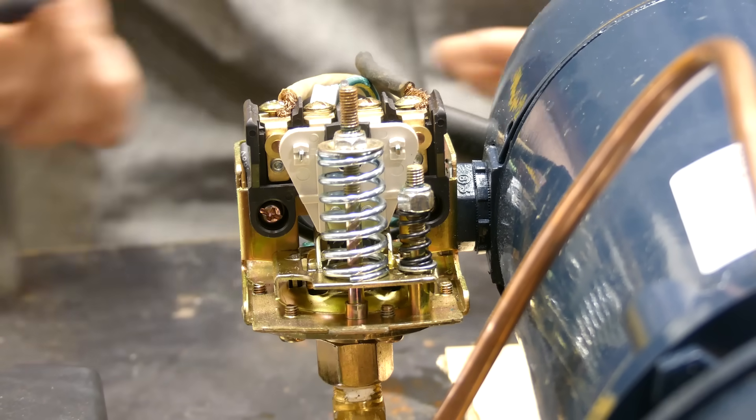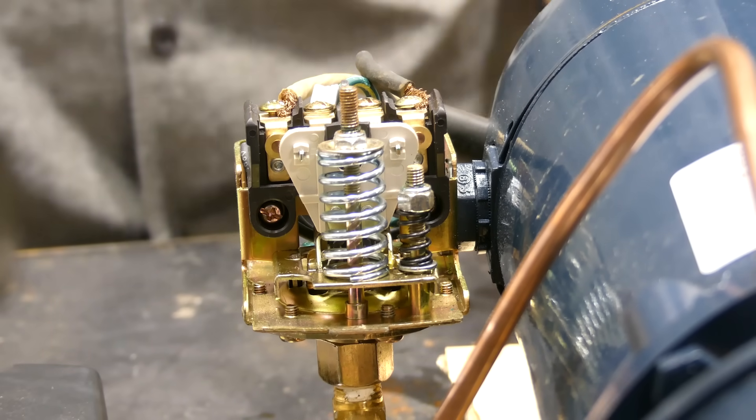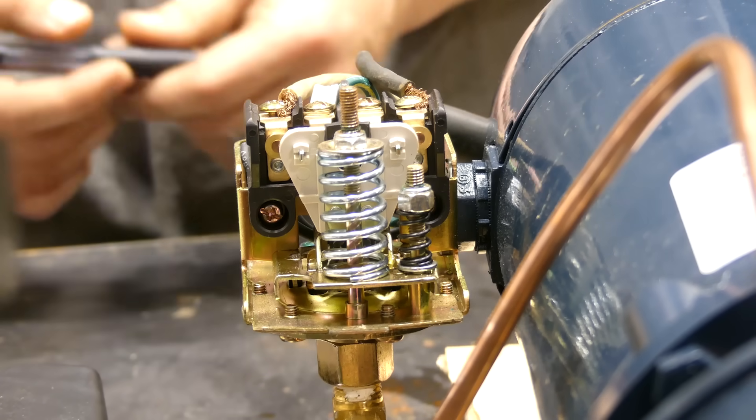Sometimes it's 5, 10 or 15 PSI depending on the switch. Let's go ahead and run this pump through a cycle. So you can see how the pressure switch operates.